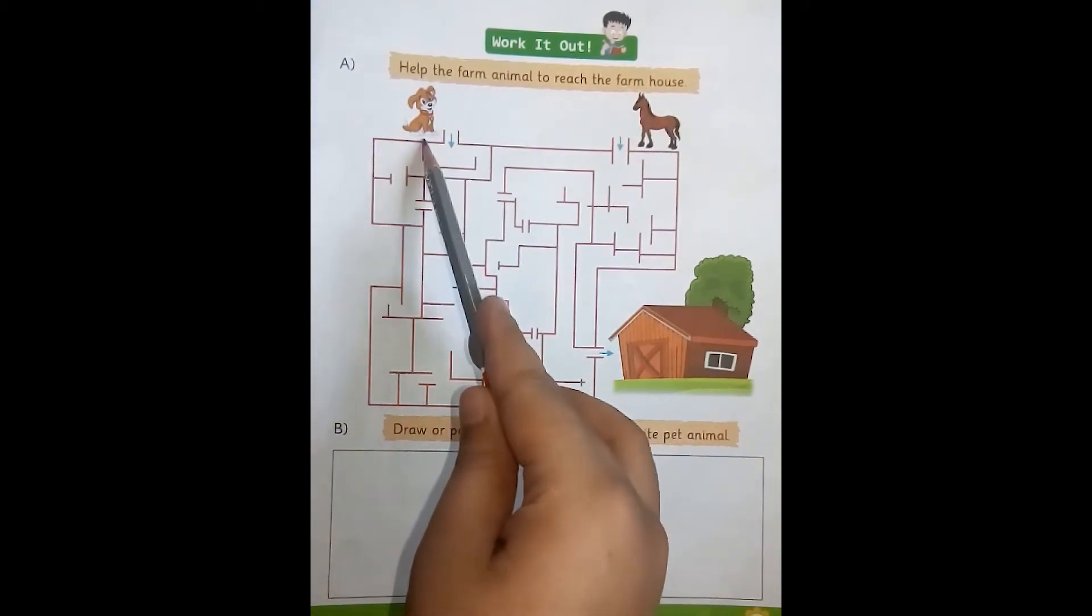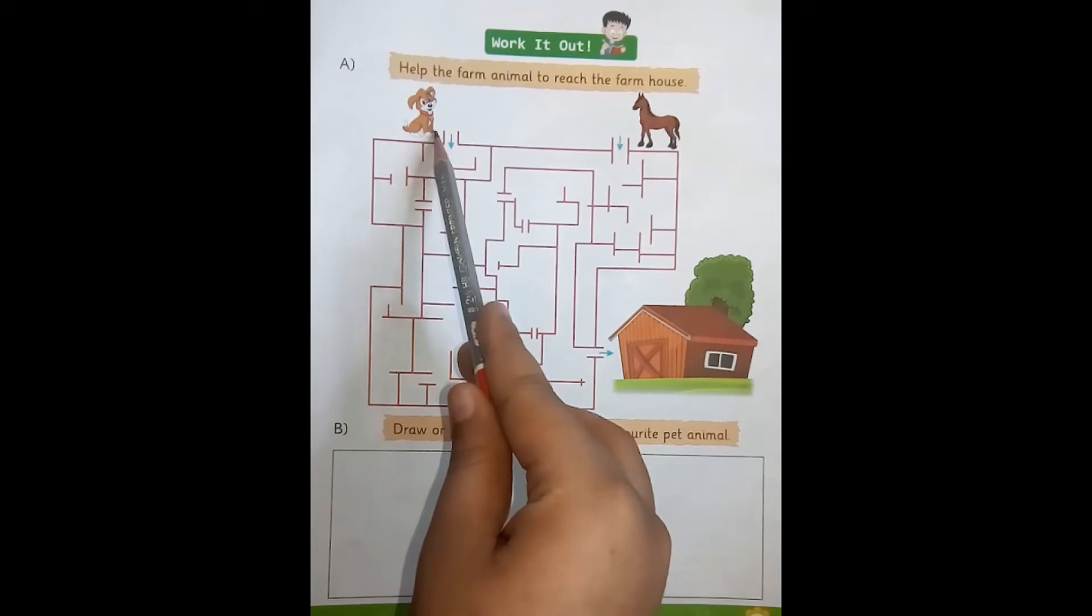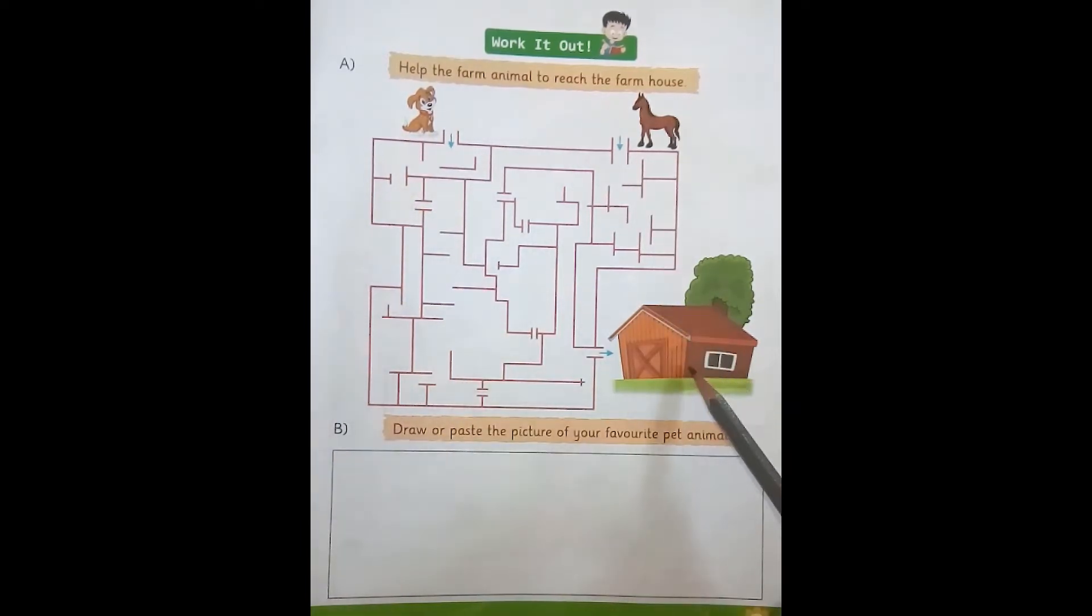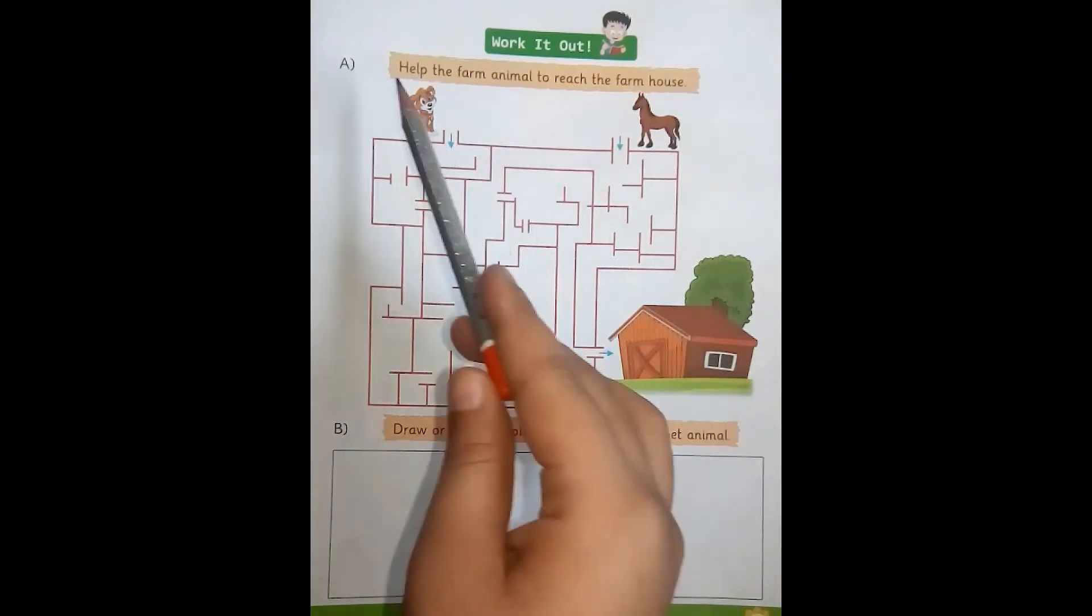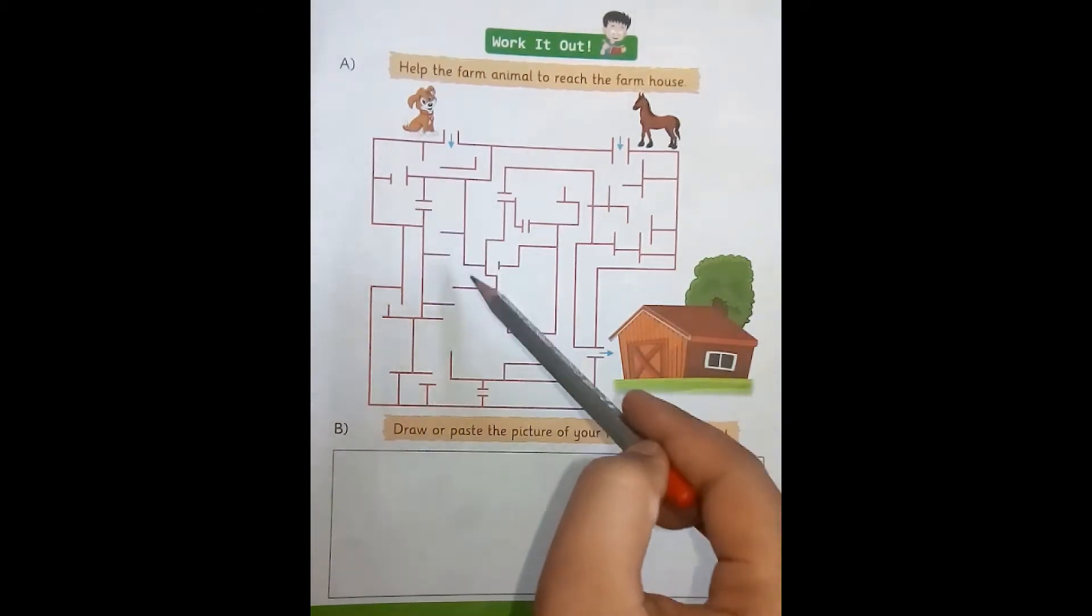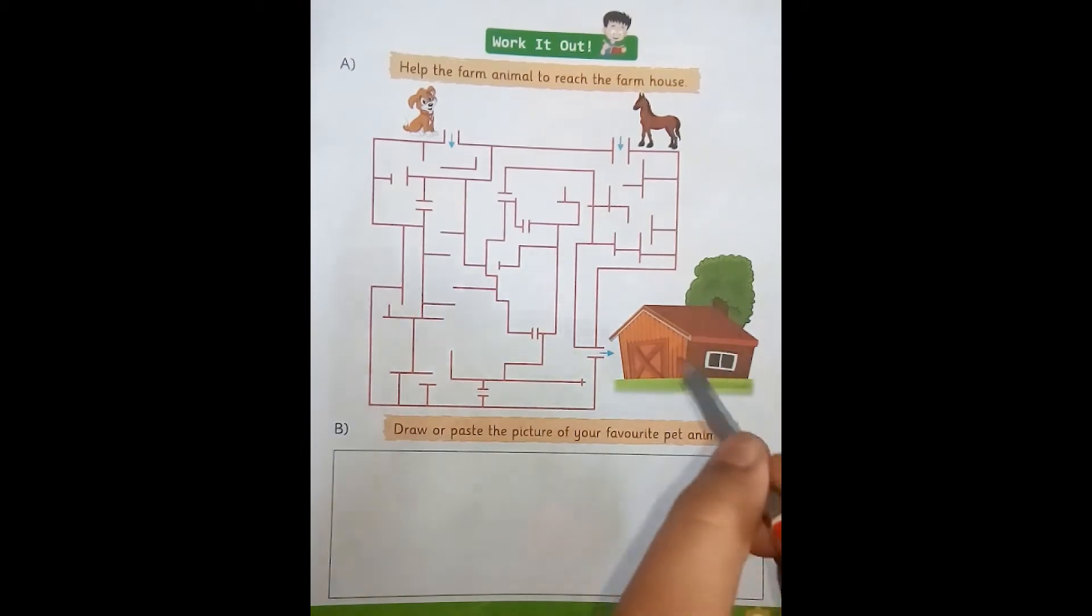This is a dog and that is a farmhouse. Here dog, follow the way to reach the farmhouse. Let's start.